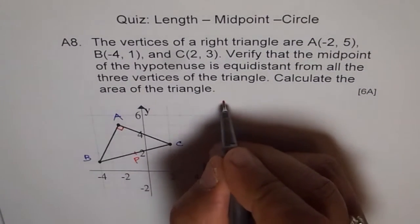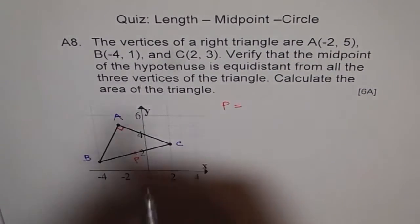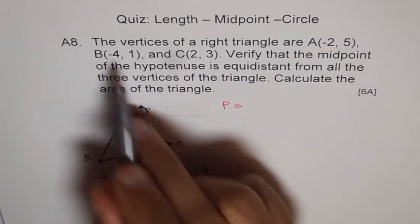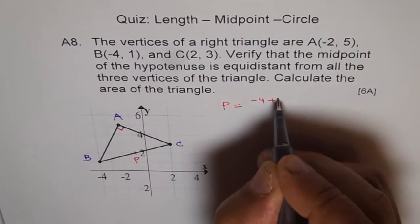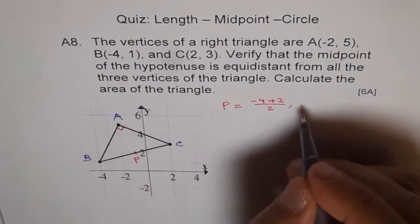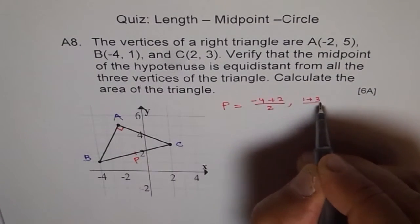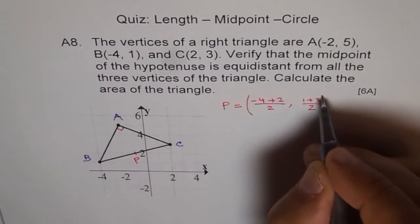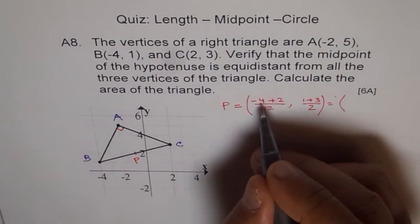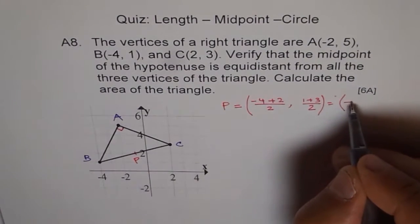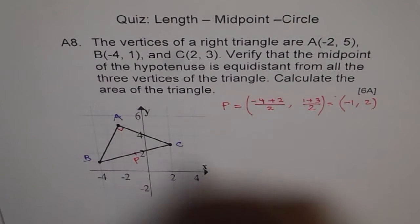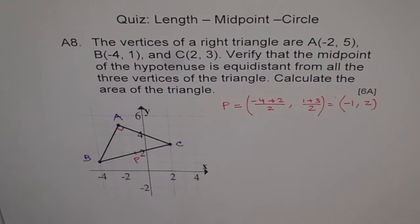So we will say P equals to midpoint of BC. So B and C just add X values. When you add X values, (-4 + 2) divided by 2. This is the X value. And the Y value will be (1 + 3) divided by 2. That will give you point P, which is equal to (-1, 2). So it looks like (-1, 2) is the correct point.